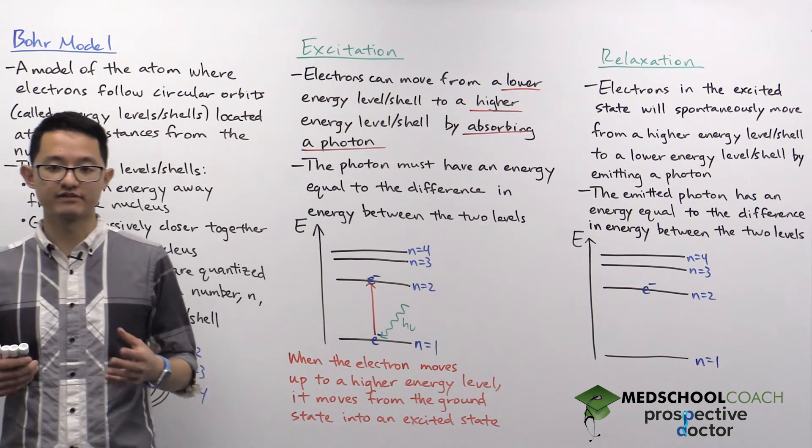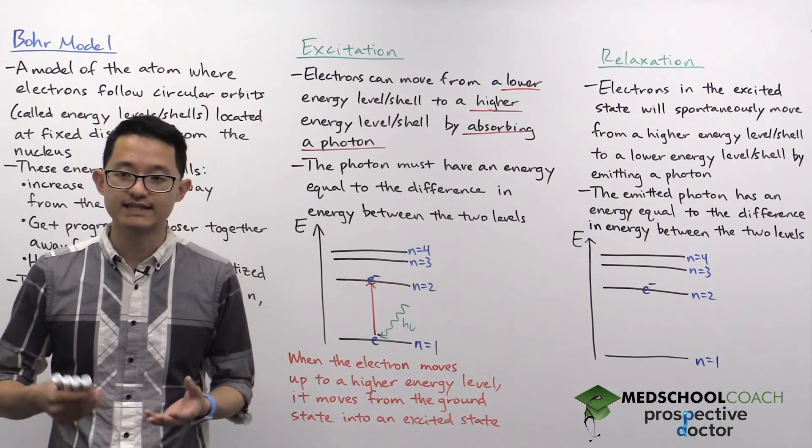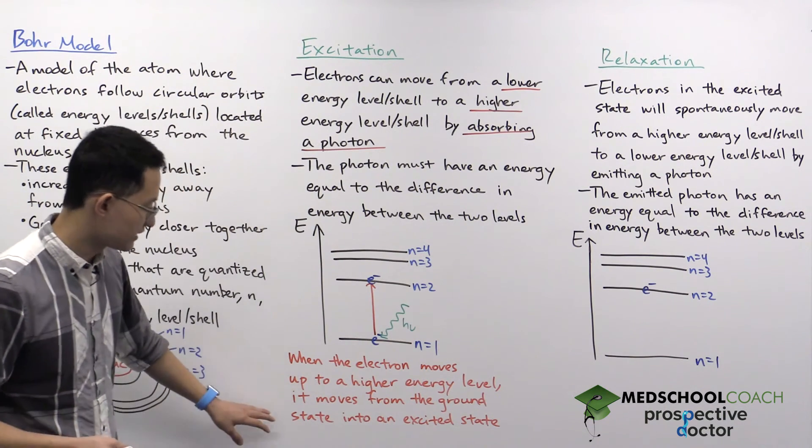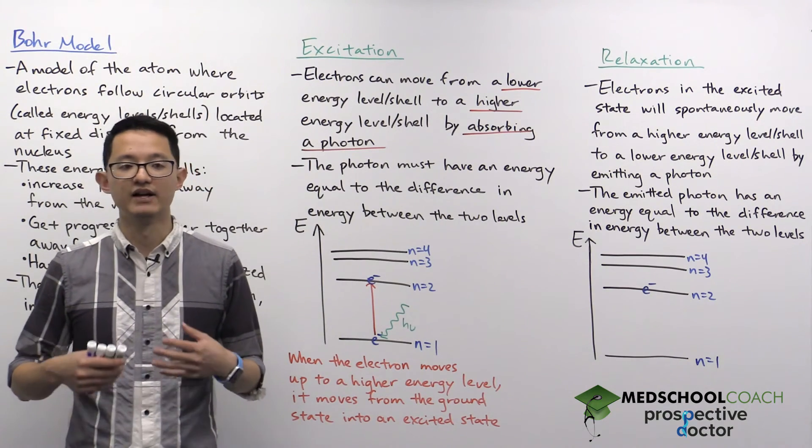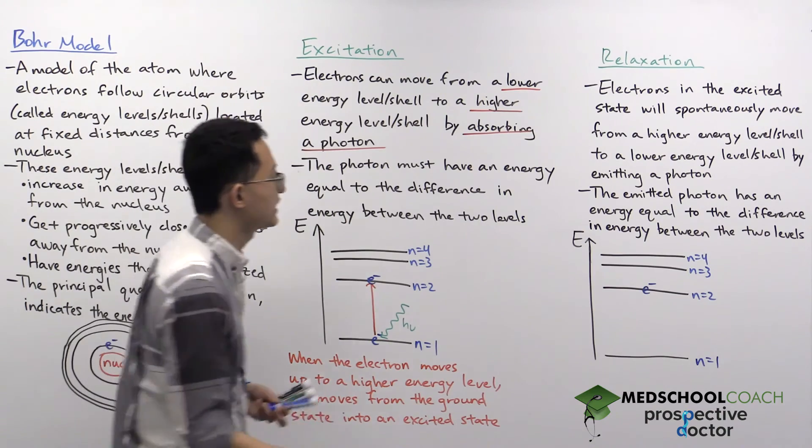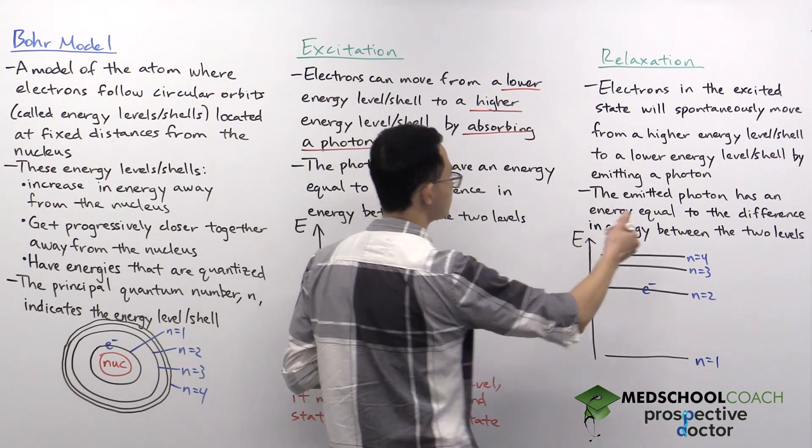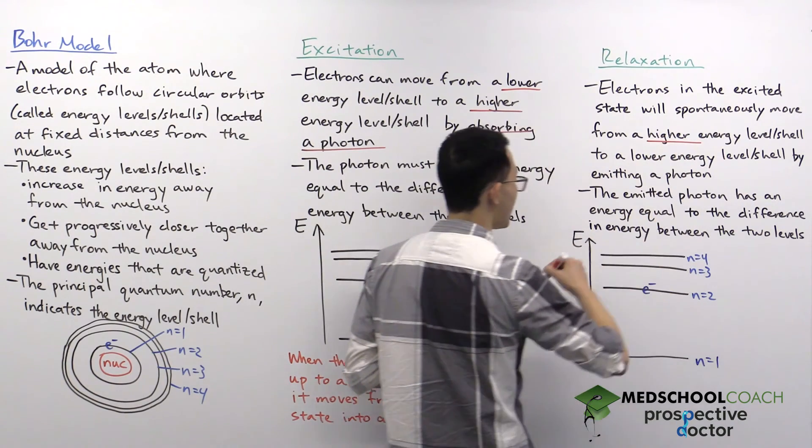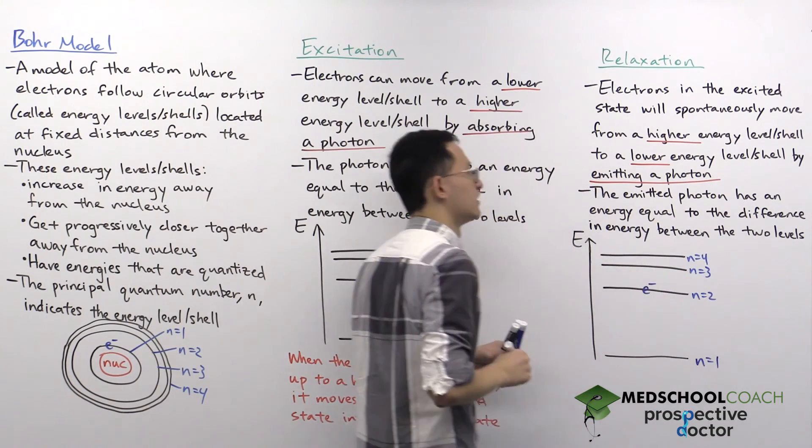The excited state, because it has more energy than the ground state, is intrinsically less stable. So because that electron at that second energy level is less stable, it will have a tendency of spontaneously undergoing relaxation. Relaxation is the process by which an electron in the excited state will spontaneously move from a higher energy level to a lower energy level by emitting a photon.